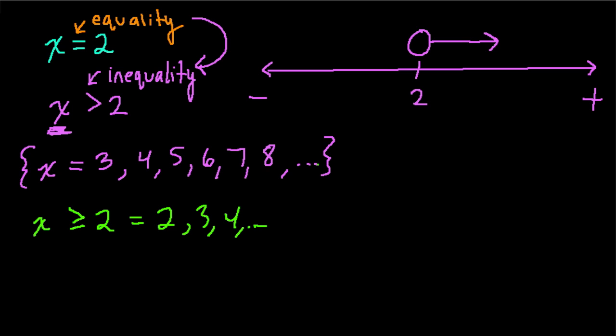And here in the next one, if x is greater than or equal to 2, the only difference now is that x could equal 2. So I'm going to start off with the same strategy, but now when I have this dot here, I'm going to fill it in. And that just means that 2 itself could also be a value of x that we plug in this equation. And that's the basic structure of how this works.